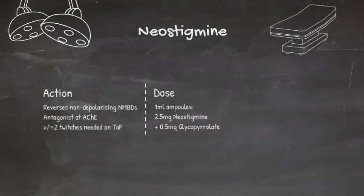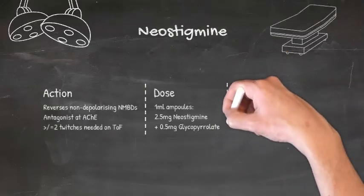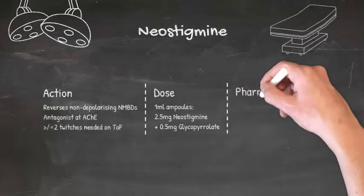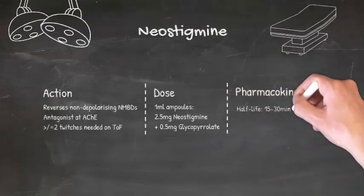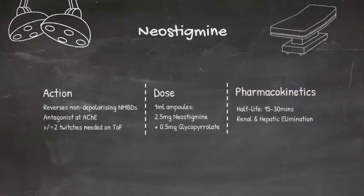For anaesthesia, it's presented in 1ml ampules that each contain 2.5mg of neostigmine with 0.5mg of glycopyrrolate. You can give 1-2mg, and its peak action is at 10 minutes after IV administration, with its effect lasting 20-30 minutes. It has both hepatic and renal elimination, with a half-life of 15-30 minutes.